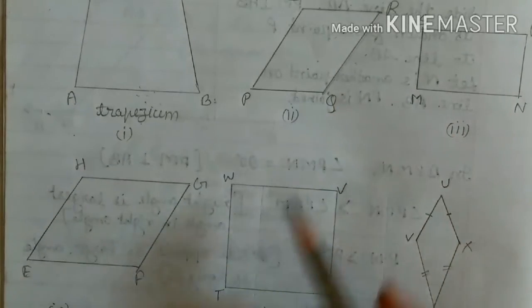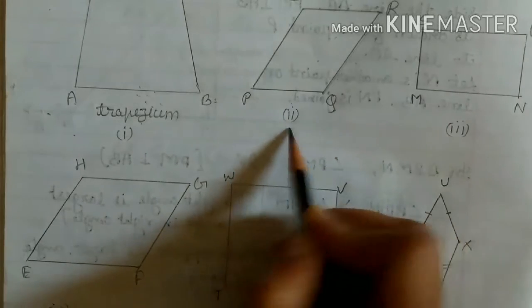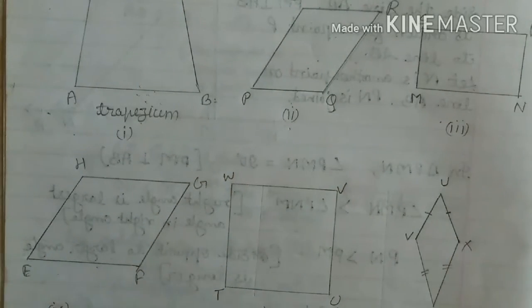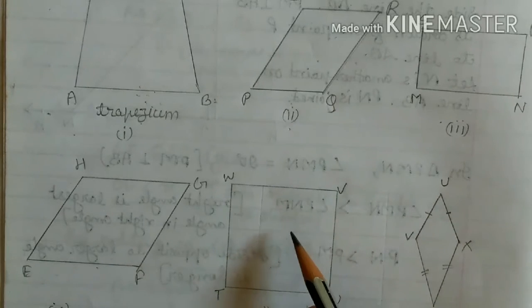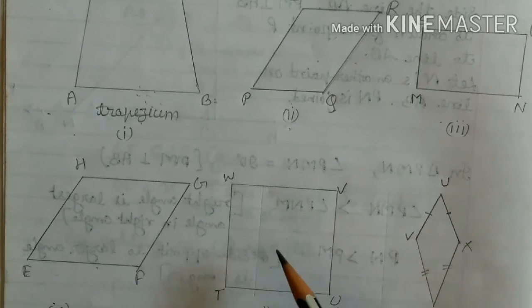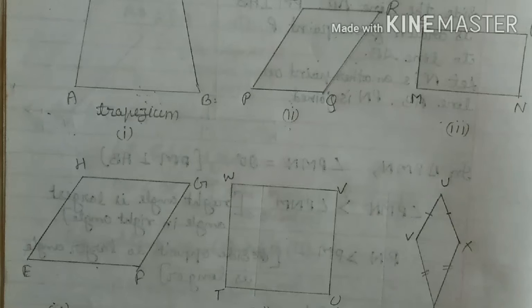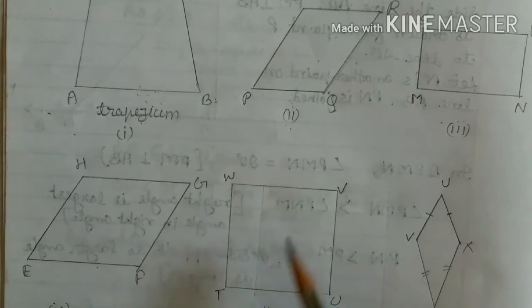All these — figure number 2, figure number 3, figure number 4, and figure number 5 — these figures are known as parallelograms, where both pairs of opposite sides are parallel.